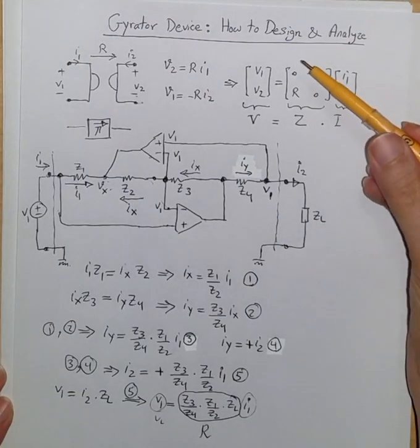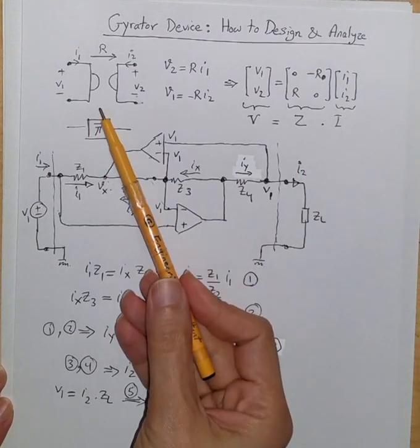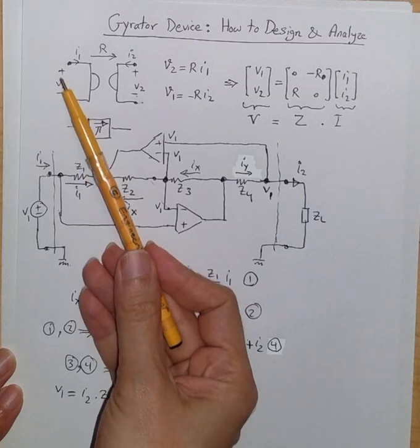How to design and analyze a gyrator device. A gyrator device is represented by this symbol. It is like a two-port where there is voltage V1, I1 at port 1.